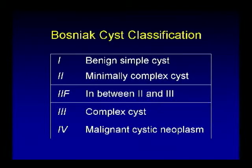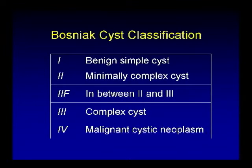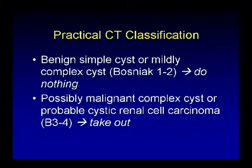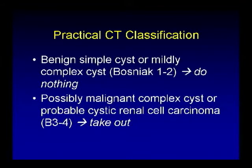Bosniak has classified cysts into five categories: one is benign simple cysts, two is minimally complex cysts, 2F are lesions between two and three, three are complex cysts, and four are malignant cystic neoplasms. In everyday practice, if it's Bosniak 1 or 2, you don't have to do anything. If it's Bosniak 3 or 4, meaning possibly malignant complex cysts or probable cystic renal cell carcinoma, the management is surgical resection.